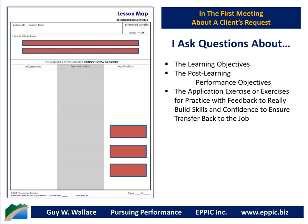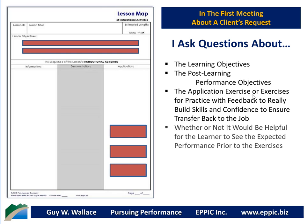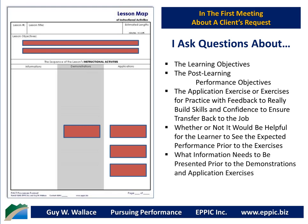Then we discuss whether or not it would be helpful for the learner to see the expected performance prior to asking them to do it in the application exercises. Yes or no is the appropriate answer, and maybe not because of the prior education and experience — the incoming knowledge and skills of the learners. We then shift into what information needs to be presented prior to these demonstration and application exercises. If you know your knowledge and skill categories, you can systematically ask: are there policies and procedures, are there laws and regulations, are there industry standards, etc., and tease that out of the client.